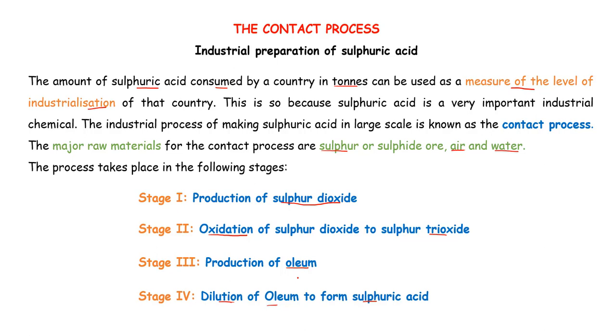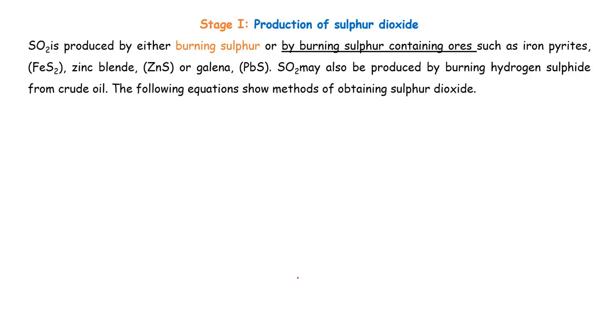Let's look at stage 1. In stage 1, we want to produce sulfur dioxide. However, to do so, we need to burn sulfur. Or if we are using the ores, we shall burn the sulfur-containing ores, such as iron pyrites, zinc blend, or galena, so that we can produce our sulfur dioxide.